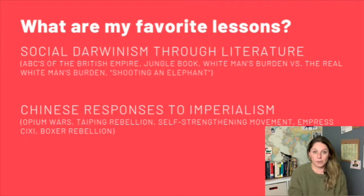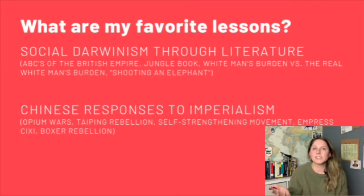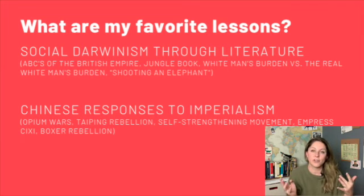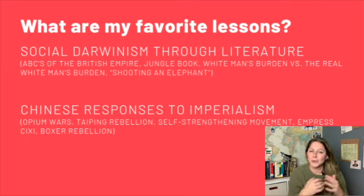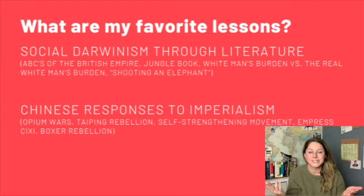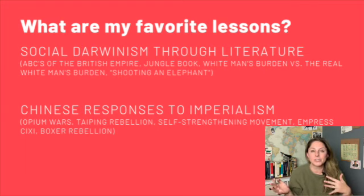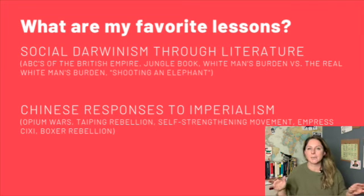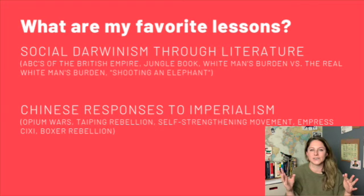The thing kids are going to have to understand — and it's hard for them — is that a lot of those people really genuinely believed they were doing something good, and yet when we look at it now it was so terrible. The other topic I really love is Chinese responses to imperialism, basically from the Opium Wars onward. From a world history perspective, China loses its mind — it's really fascinating because China has been our super stable go-to for thousands of years.